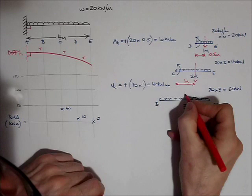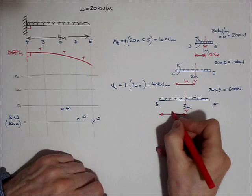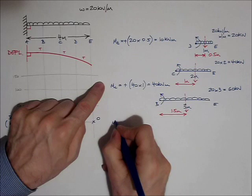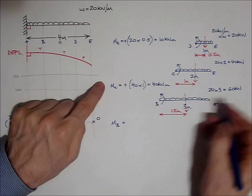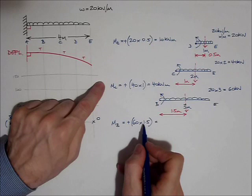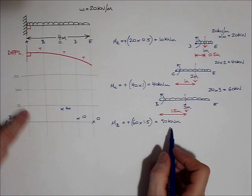And that load acts right at its centre, straight down the middle, and I reckon that that distance is 1.5 metres from point B. So if I take moments about point B now, to calculate the internal moment within the beam, MB equals this force, 60 kilonewtons, times its distance from point B, 1.5. It's all positive because it's going clockwise, 60 times 1.5, that's 90 kilonewton metres.